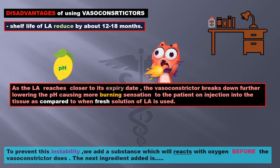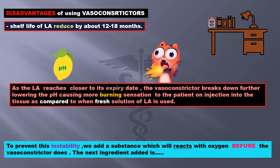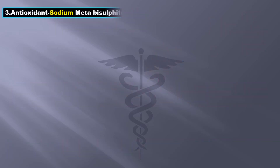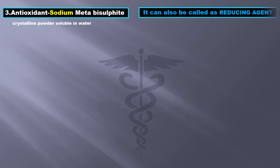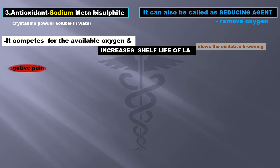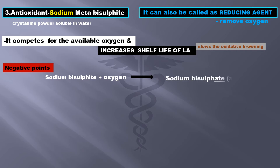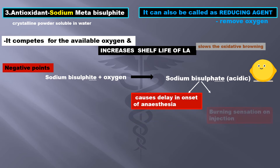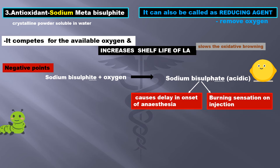To prevent this instability, we add a substance that will react with oxygen before the vasoconstrictor does. The third ingredient added is the antioxidant sodium metabisulfite, also called a reducing agent. Reducing agents remove oxygen from other substances and compete for available oxygen, thus increasing the shelf life of LA. However, sodium metabisulfite plus oxygen gives rise to sodium bisulfate, which is acidic, and this causes a delay in onset of anesthesia as well as a burning sensation on injection.